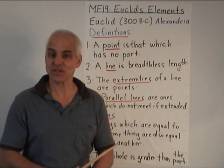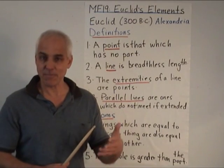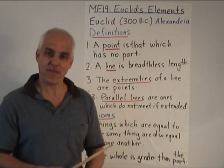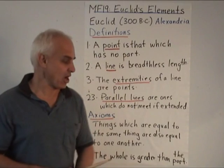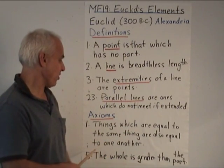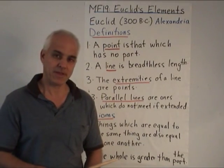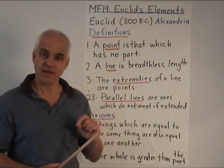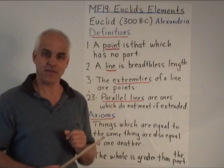After the definitions come some axioms. So there are five sort of simple rules, logical rules that are valid in rather large context. For example, things which are equal to the same thing are also equal to one another. He's saying that if A equals B and A equals C, then B equals C.